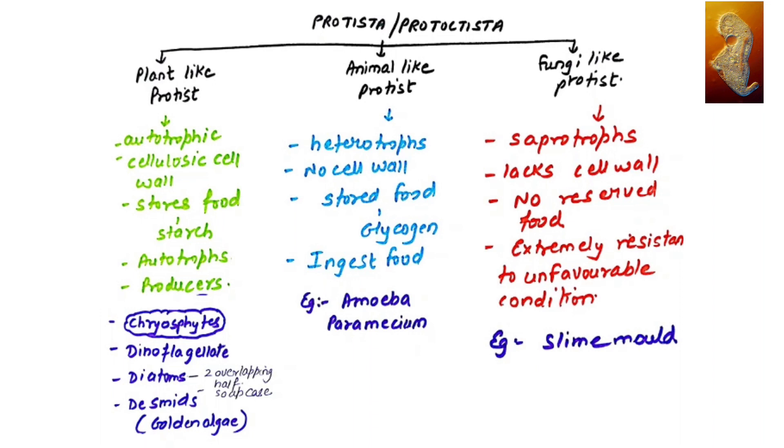So Protista was having plant-like protists which gave rise to Kingdom Plantae, animal-like protists which gave rise to Kingdom Animalia, and fungi-like protists which gave rise to Kingdom Fungi. Let's understand the plant-like protist examples in much detail as it is important for your NEET exam.